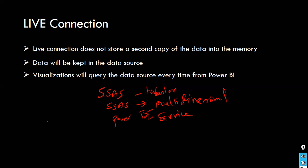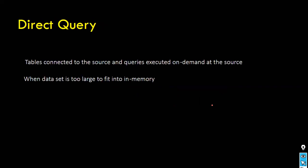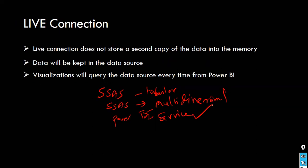The advantages of live connection are: no size limitation since data remains in the source system, and you can perform DAX transformations and use more DAX functions compared to direct query mode. The disadvantage is you cannot do data transformation using Power Query — it will be disabled — and you cannot combine data from multiple data sources. If you create a live connection with Power BI Service data, you can only use that; you cannot mix in other files.